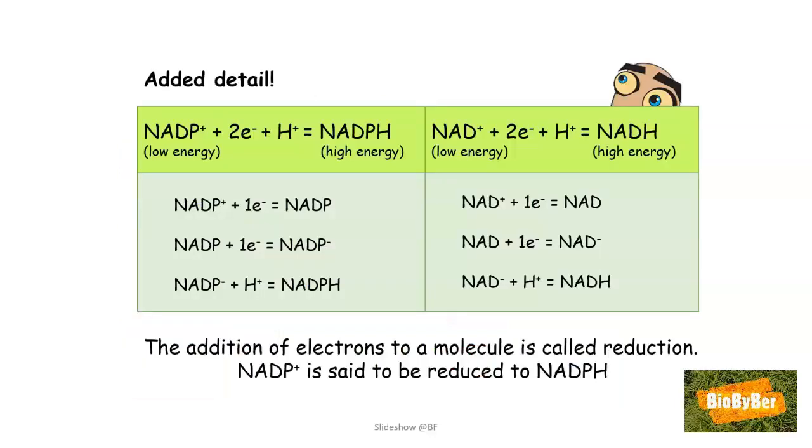Now for those of you who like the detail, we have NADP plus which is a low energy molecule picking up two electrons and a H plus, becoming the high energy NADPH. It will be the same with NAD plus which takes part in respiration that we're not really too interested in today. Now taking this step by step, we can see how it works out.